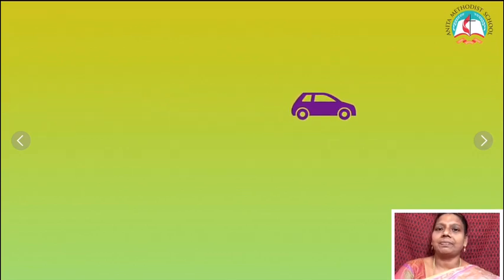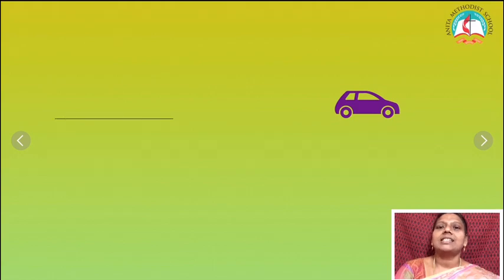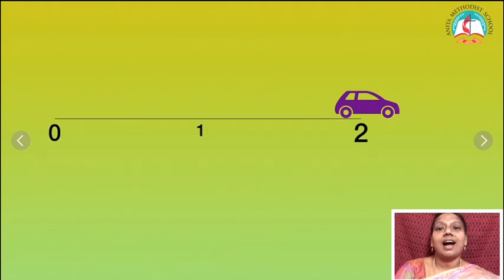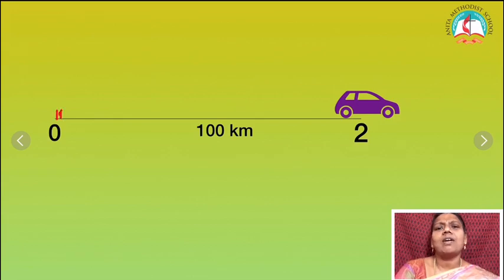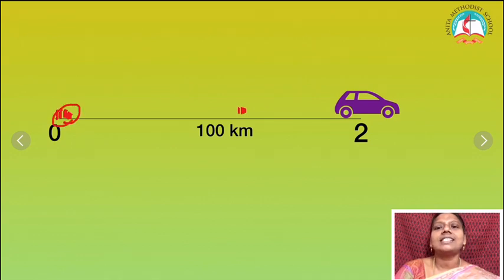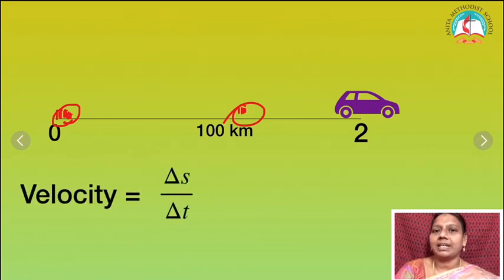I am giving you one more example. If a car is moving from one place to another, suppose it takes 2 hours to cover 100 kilometers. Within 2 hours it covers 100 kilometers. But what we are going to find out is the smallest change — within those 2 hours it may be 0.25 or it may be 0.00001. So that smallest change — there is a change in time — and velocity is equal to delta s by delta t.